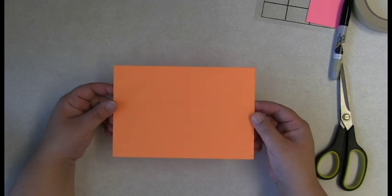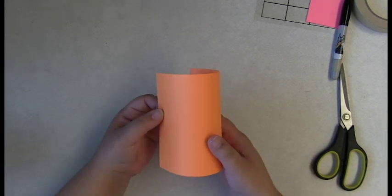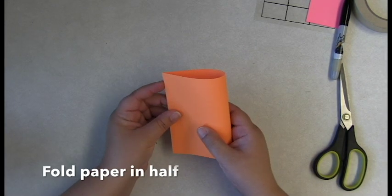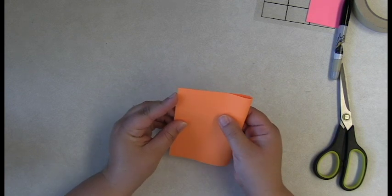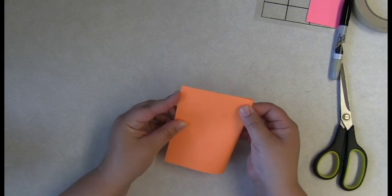Take your 5x7 sheet of paper. You're going to fold it over, otherwise known as hamburger style.